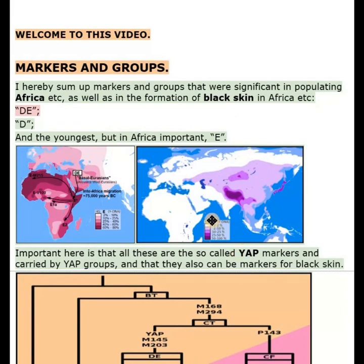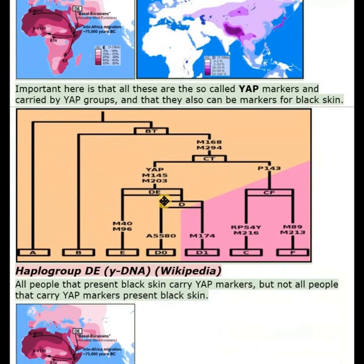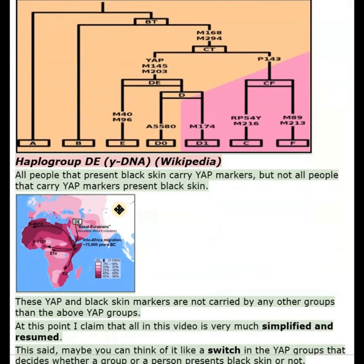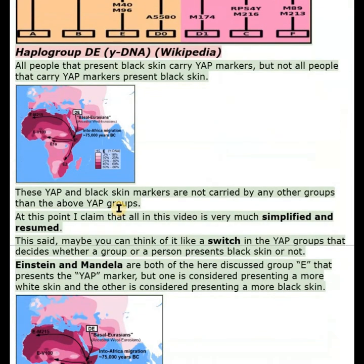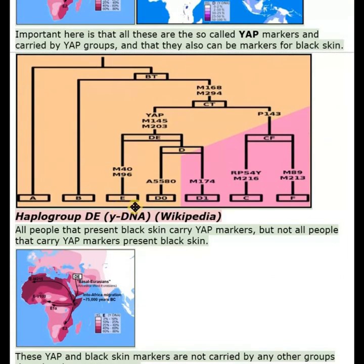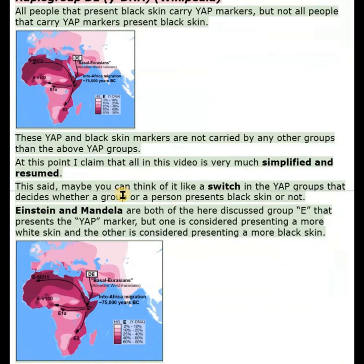The relevant haplogroups are D, E, and the youngest but in Africa important E. Important here is that all these are the so-called YAP markers, carried by YAP groups, and that they also can be markers for black skin. All people that present black skin carry YAP markers, but not all people that carry YAP markers present black skin. These YAP and black skin markers are not carried by any other groups than the above YAP groups.